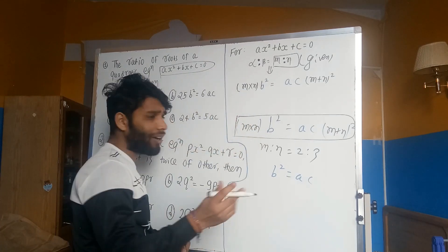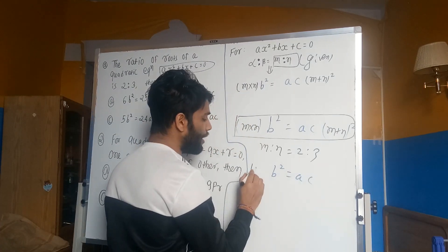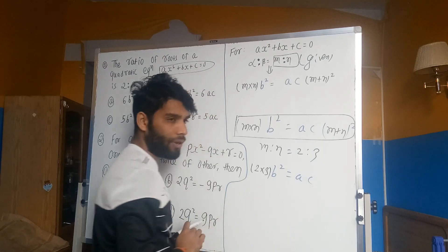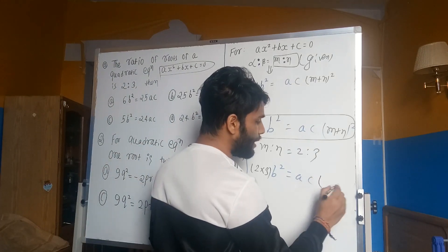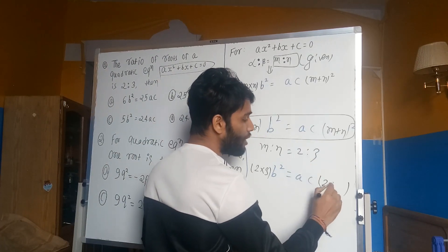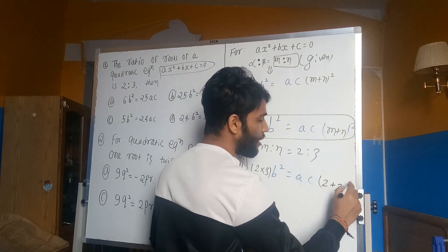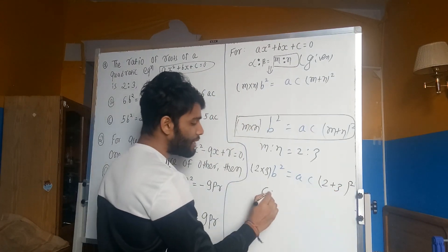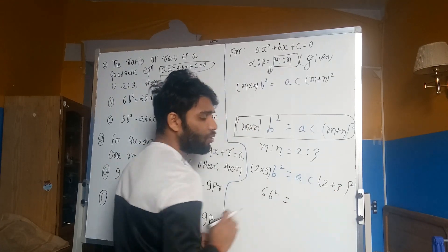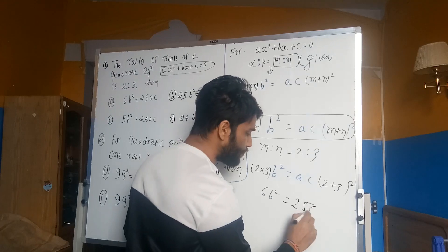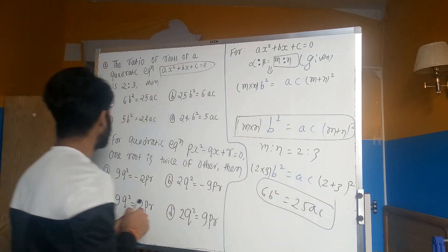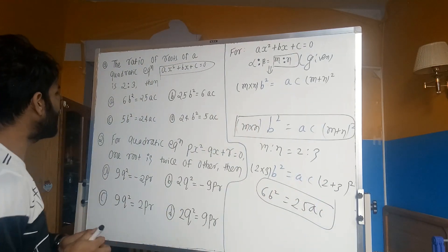We will multiply this square by 2 into 3. We will multiply this square by 2 plus 3 square, so we will multiply this square by 2 plus 12.